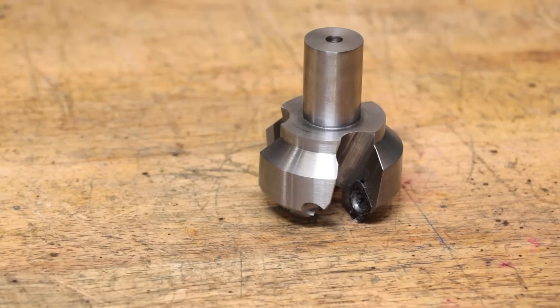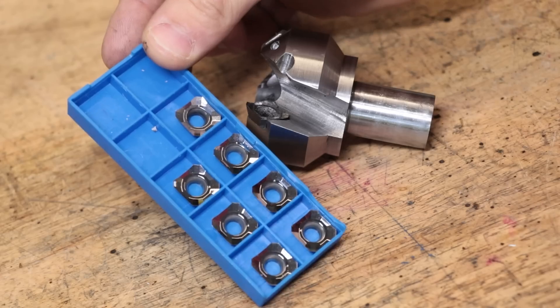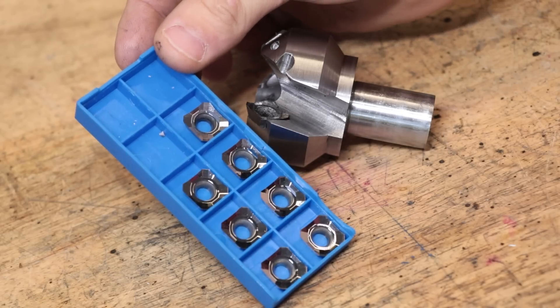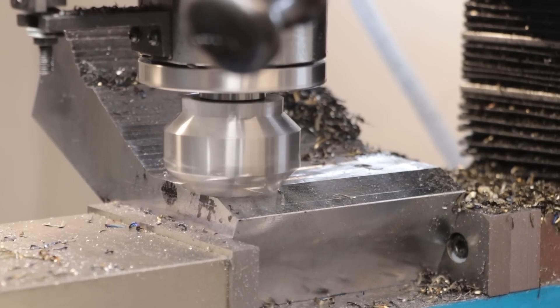About six months ago I made this face mill for the milling machine. It uses these sharp milling cutters, and this thing can really chew through metal when I really need it to.